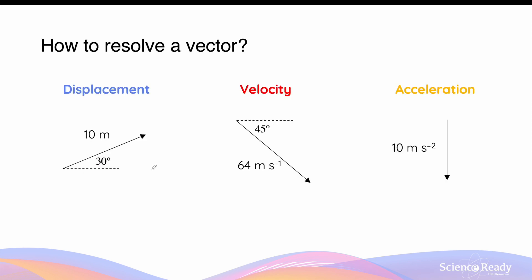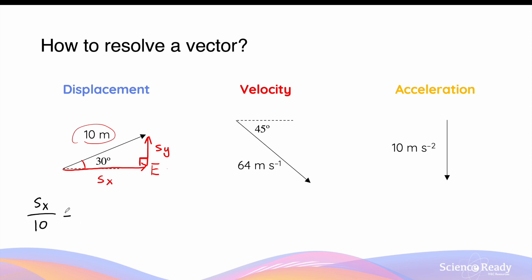Let's go through some specific examples on how we can resolve vectors. Let's say the displacement of an object is 10 meters at 30 degrees to the east. We can draw two perpendicular components from the tail to the head of the vector, such that they form a right angle between them. Let's call this component Sx and this component Sy. We'll need to use trigonometry to calculate the values of the two components. Sx is the adjacent side to the angle 30 degrees, while Sy is the opposite side, and 10 meters is the hypotenuse. So Sx divided by the hypotenuse, which is 10 meters, is equal to cosine 30 degrees. So the horizontal component is equal to 10 times cosine 30 degrees, which gives a value of 8.66 meters to the east.